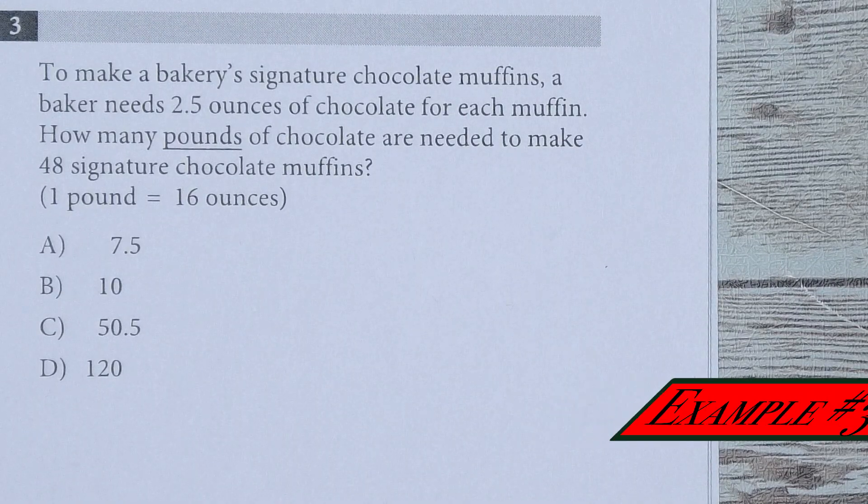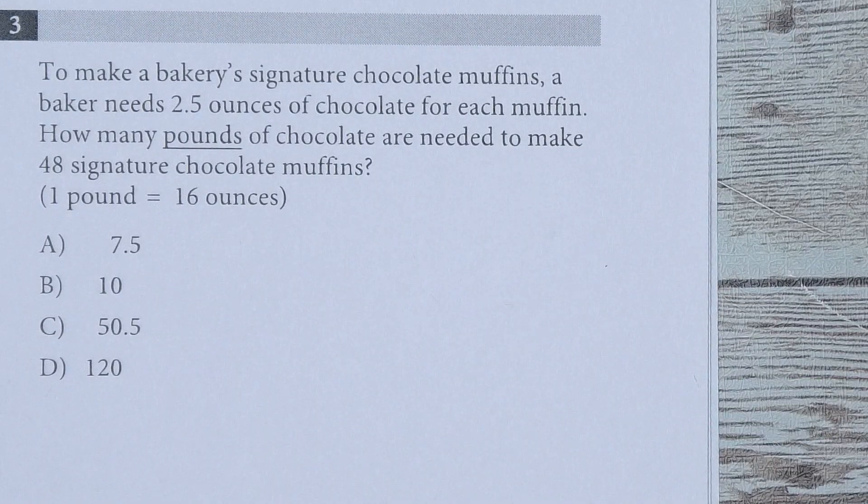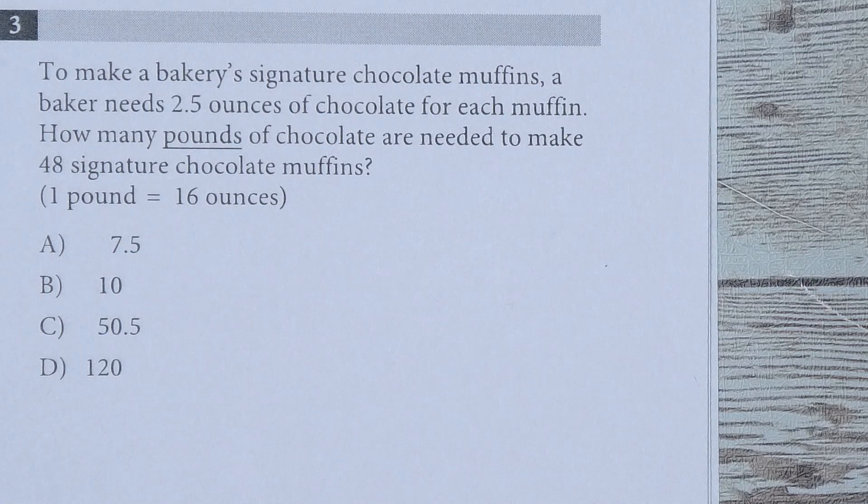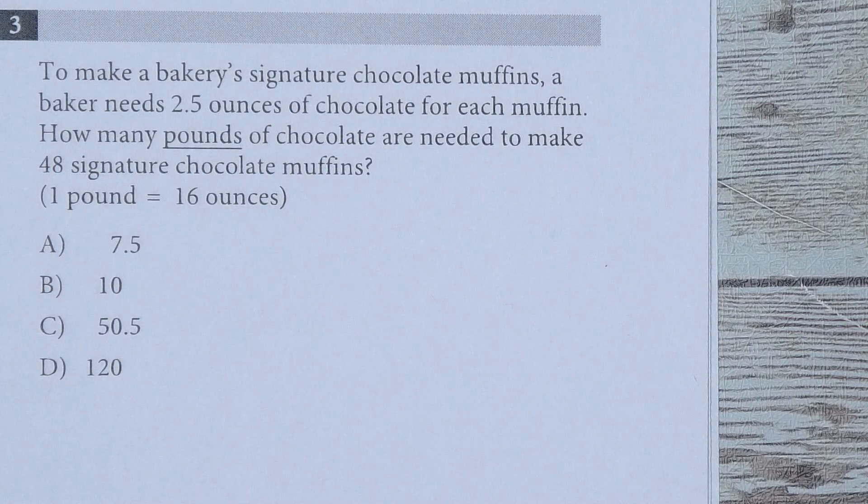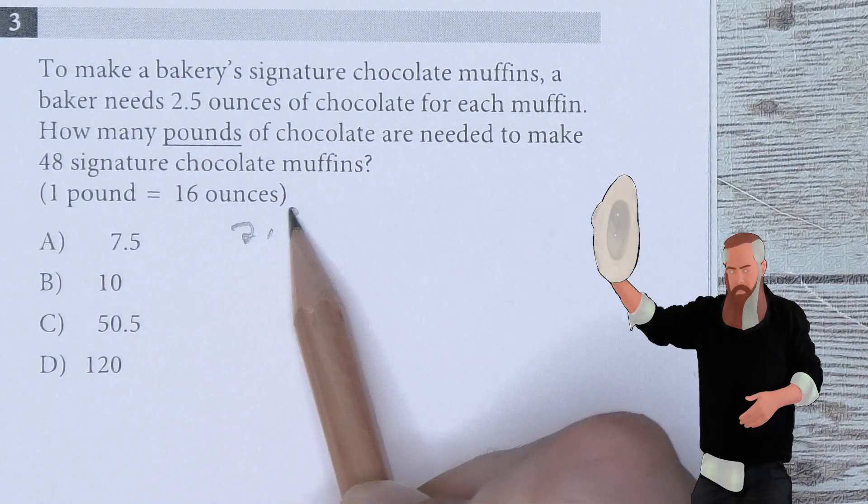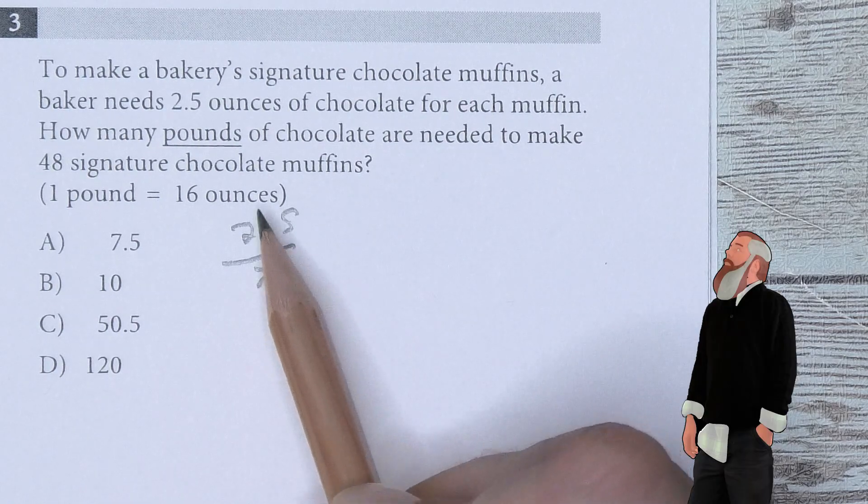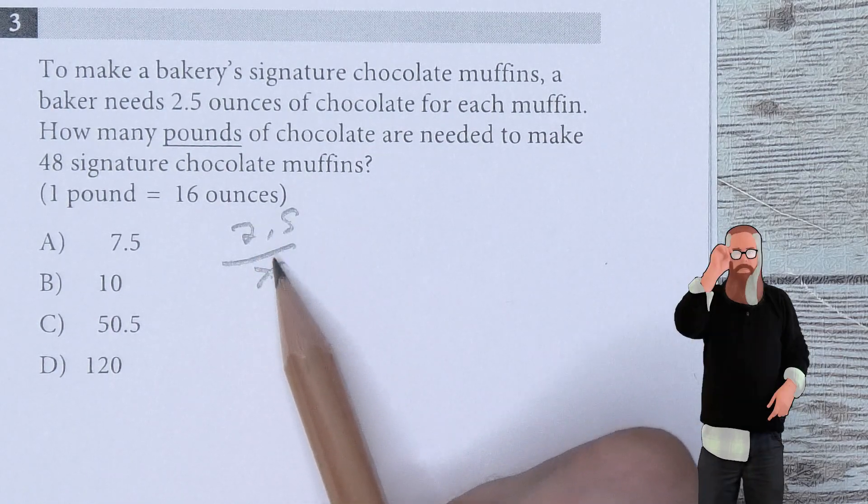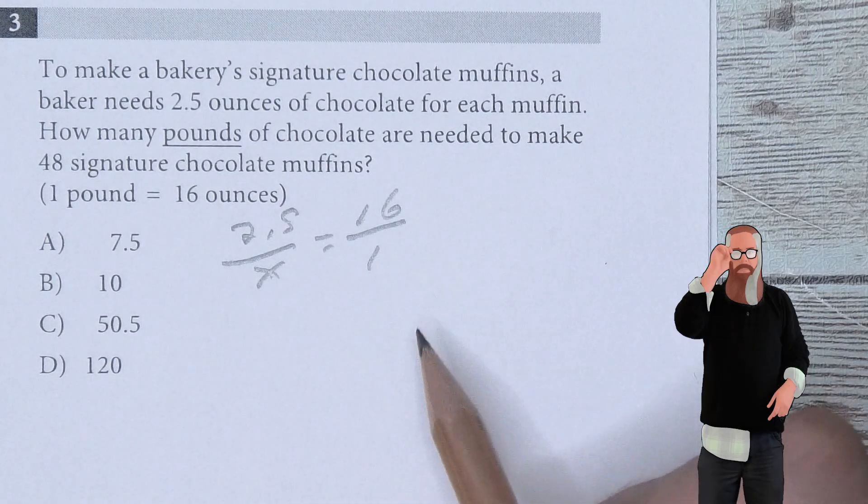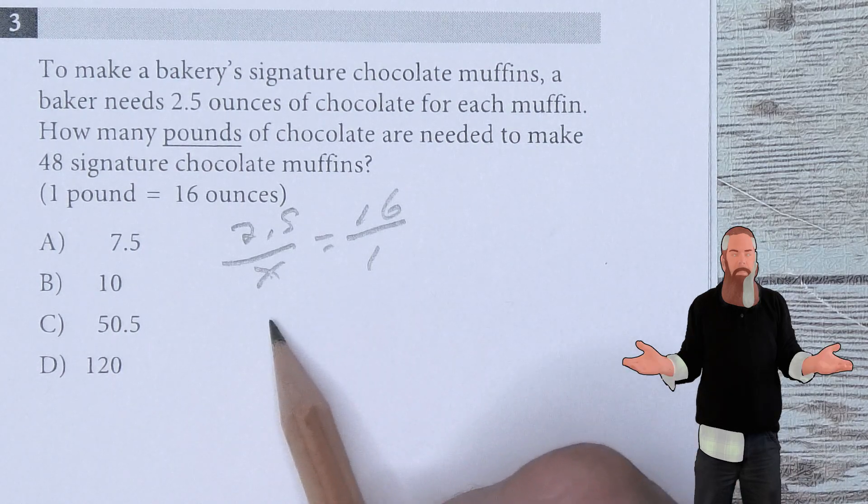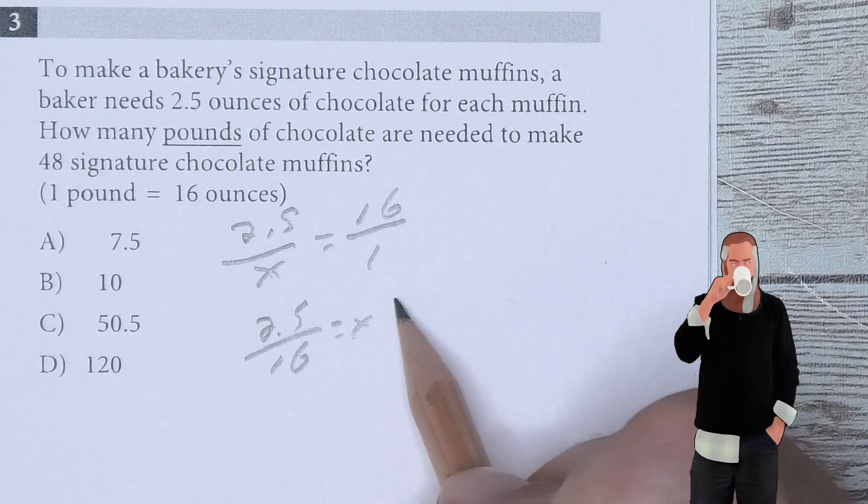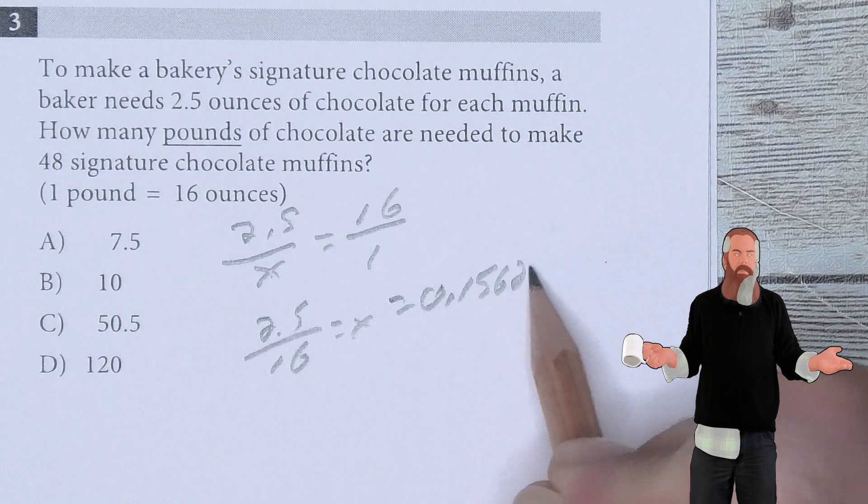To make a bakery's signature chocolate muffins, a baker needs 2.5 ounces of chocolate for each muffin. How many pounds of chocolate are needed to make 48 signature chocolate muffins? 1 pound equals 16 ounces. We're going to set up a ratio: 2.5 over X equals 16 ounces over 1 pound, small over large. By solving this, 2.5 divided by 16 gives us X, which is 0.15625.